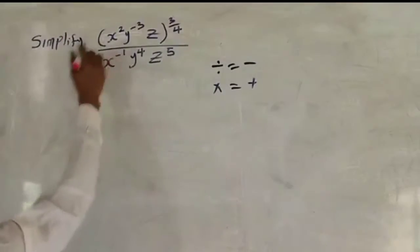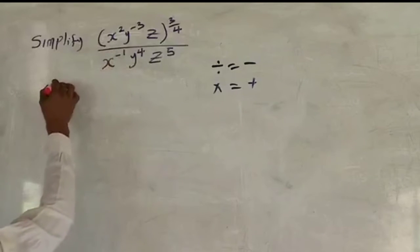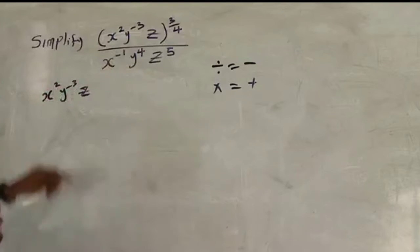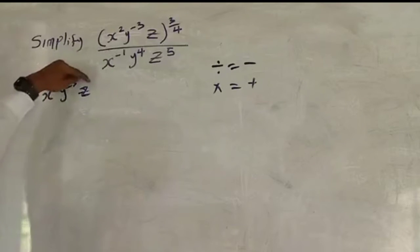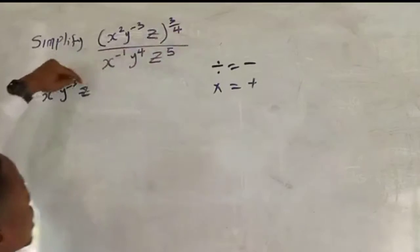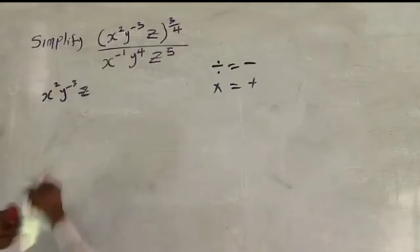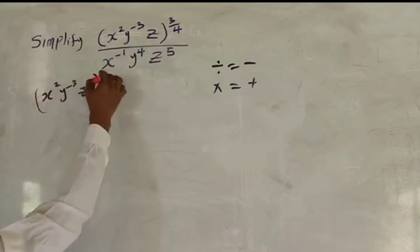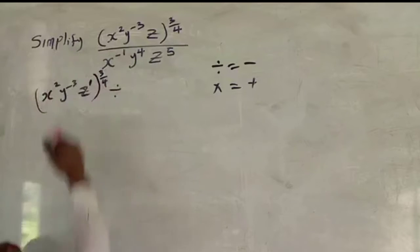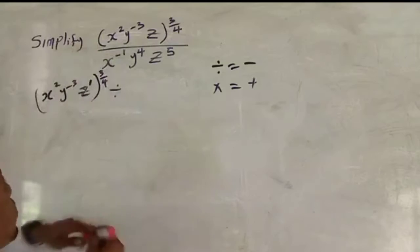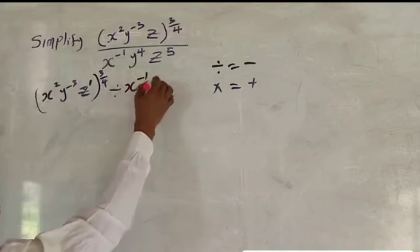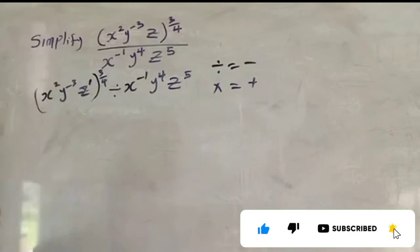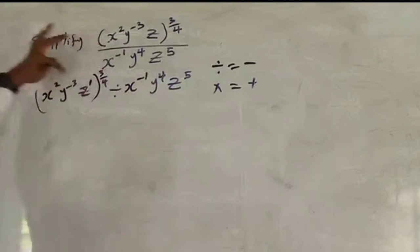Let's rewrite this as a straight line. We have s raised to power 2, y raised to power minus 3, z — note that the basic power of z here is 1, since z means z to the power 1, so z raised to power 1 — all raised to power 3 over 4, divided by s raised to power minus 1, y raised to power 4, and z raised to power 5.